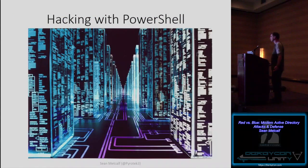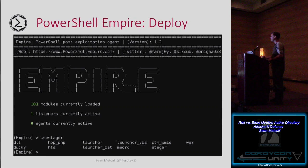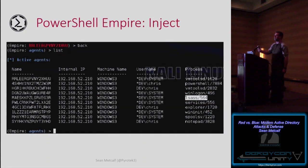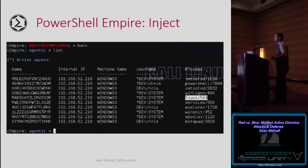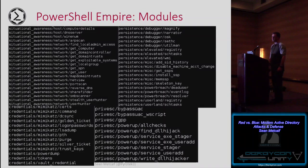PowerShell Empire wraps a lot of the deployment methods attackers use today: macros, HTA, DLLs, including injecting the agent directly into processes like LSASS. It can leverage the PowerTools Invoke-PSInjector to inject the agent. If you're on the blue team, you want to understand what these tools are doing and how best to detect them — because Empire uses modules ranging from recon to credential theft, reuse, persistence, and privilege escalation.